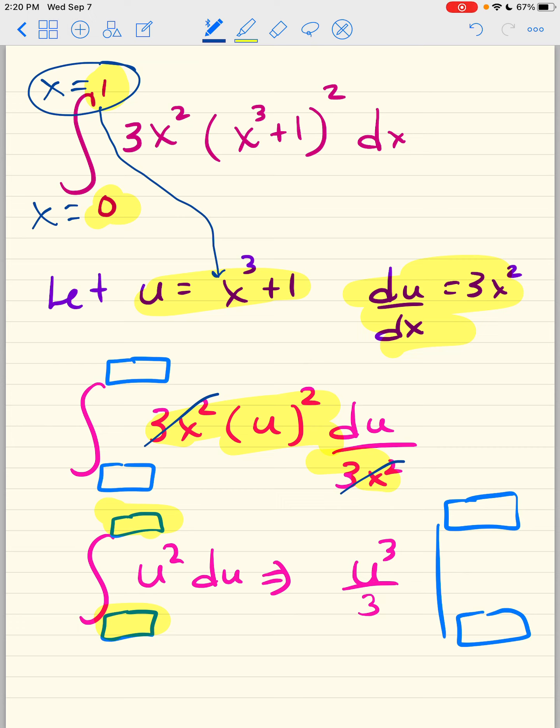So 1 to the third is 1 plus 1 is 2, so therefore this is 2. Plug in your 0, 0 to the third plus 1 is 1. So that's 2, and that's 1. Let's plug 2 back here. 2 to the third is 8 over 3 minus 1 over 3. That's 7 thirds.